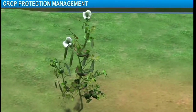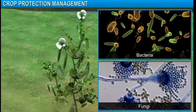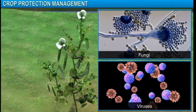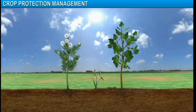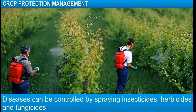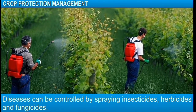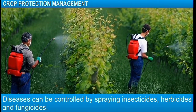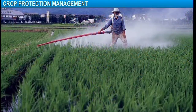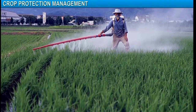Diseases in plants are caused by pathogens such as bacteria, fungi and viruses, just like in humans. These pathogens are transmitted through soil, water and air. They can be controlled with pesticides which include insecticides, herbicides and fungicides. These can be sprayed on crop plants or can be used for treating seeds and soil.